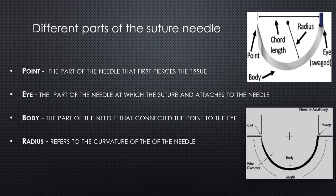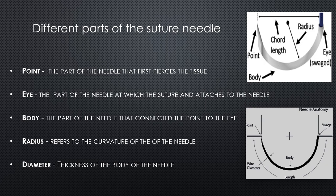Next we have the wire diameter, which is the thickness of the original wire used to make the suture needle's body. This is significant because the smaller the diameter, the less traumatic it generally is to tissue. Lastly, chord length is the distance of a straight line drawn from the needle point to the needle eye, or swaged end.